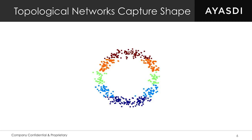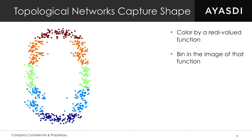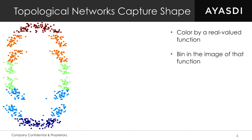Suppose this point cloud is your data — just an XY plot of some two-dimensional data. We can all see that it's a circle. So how can we capture mathematically the fact that this is a circle? Here's the method. First, choose some function to color your data — color it by a real-valued function, meaning assign a single real number to each data point. In this example we're going to color by height: red to blue based on top to bottom. Then in the image of that function, bin the data — a top bin, a second-highest bin, a second-lowest bin, and a bottom bin. The bins are overlapping, which is why you see the orange points double up and split apart.